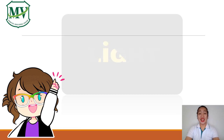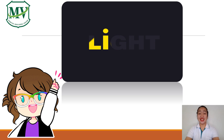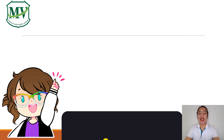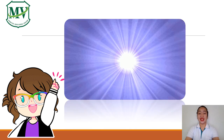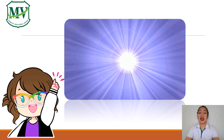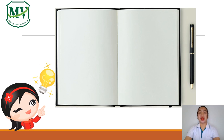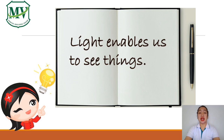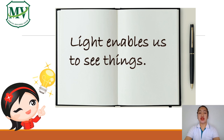What word do you see? Yes, it is light. How about this one? It is also light. Now remember, light enables us to see things around us.